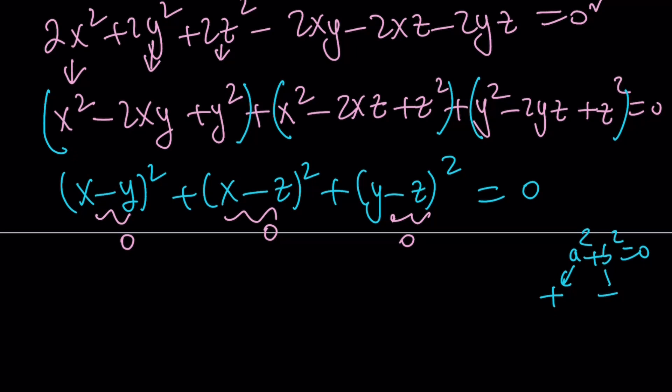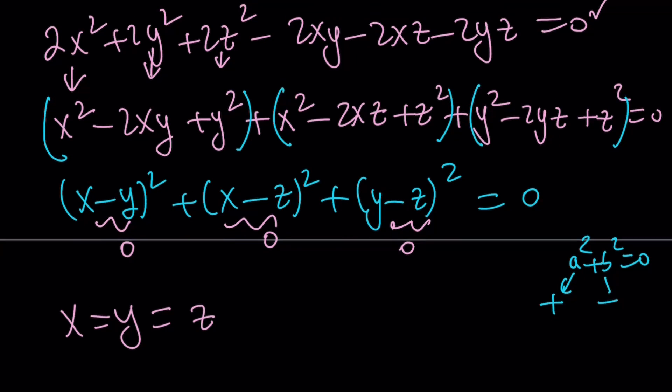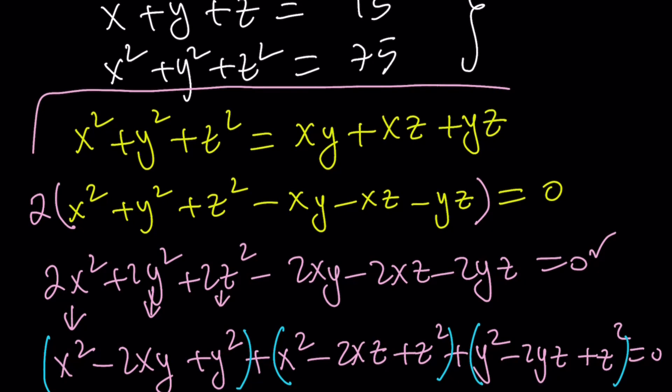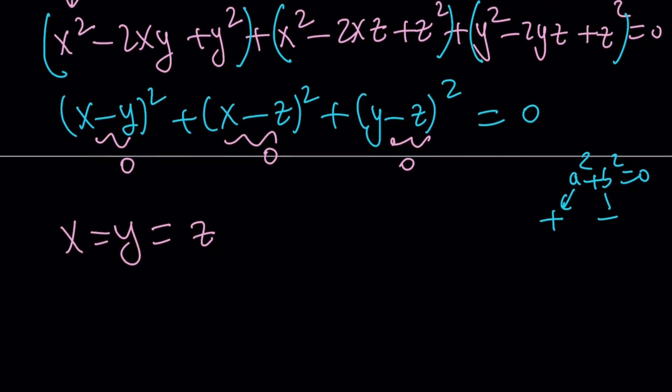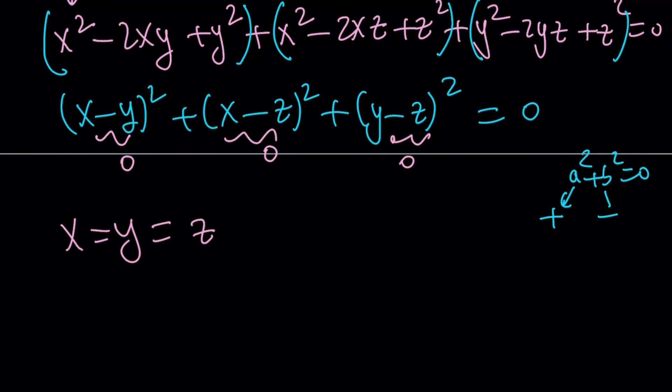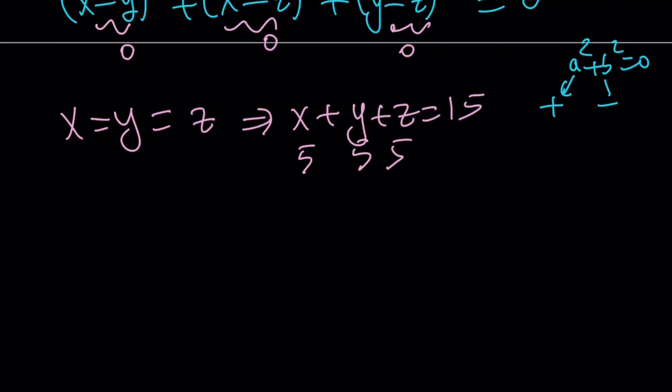So from here, you get the following: x equals y, y equals z, x equals z, which means x equals y equals z. And this is a very important result. So whenever you have this equality, that means x, y, z are all equal. And think about it, if x and y are equal, xy becomes x squared, or y squared, or z squared. So that's a really cool result. If they're all equal, and we know that their sum is 15, so each number is going to be 5, 5, and 5. And that is the end of the first method.